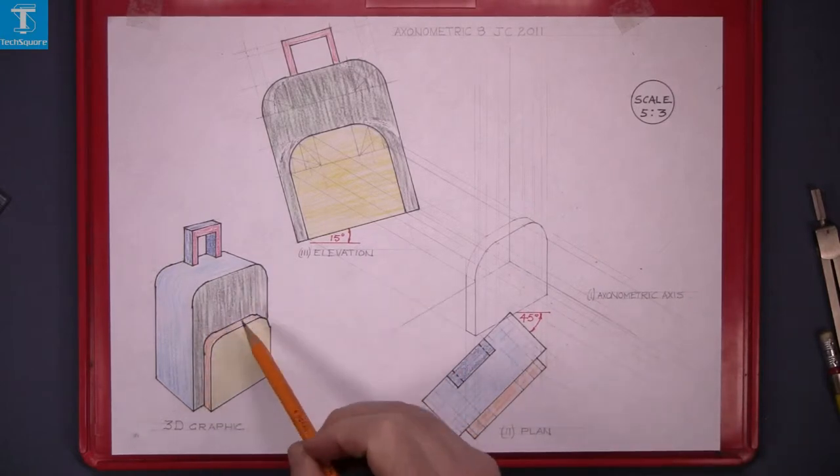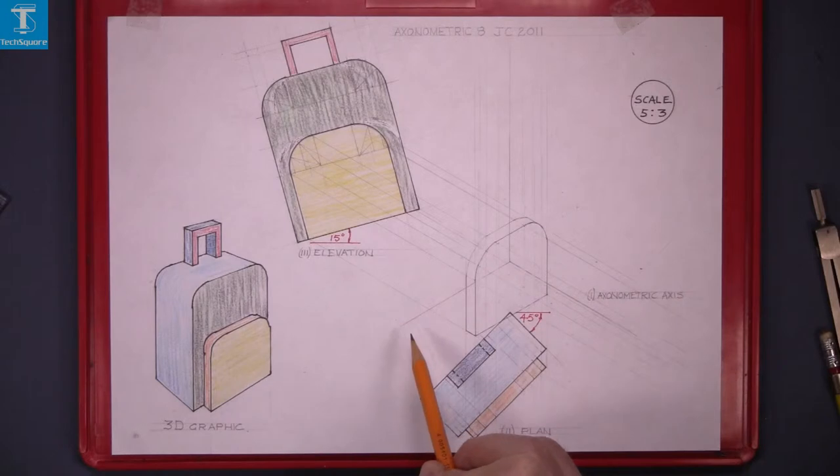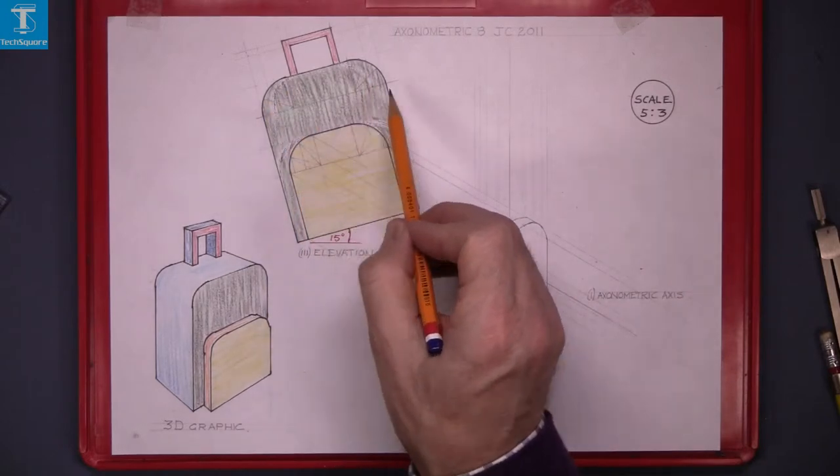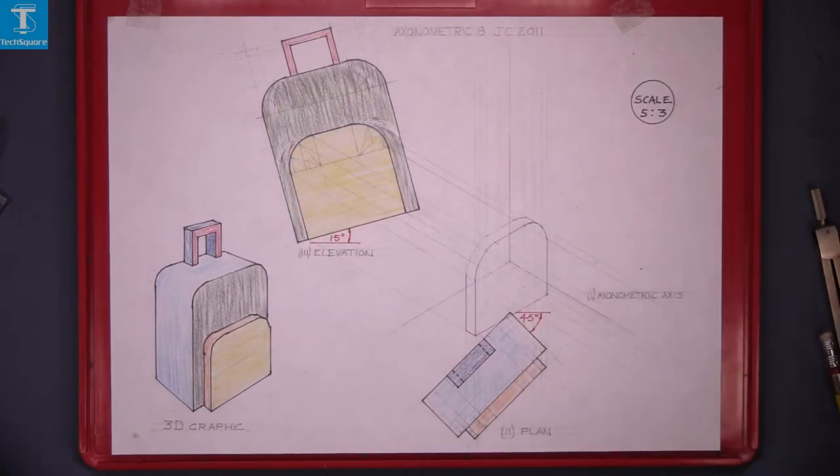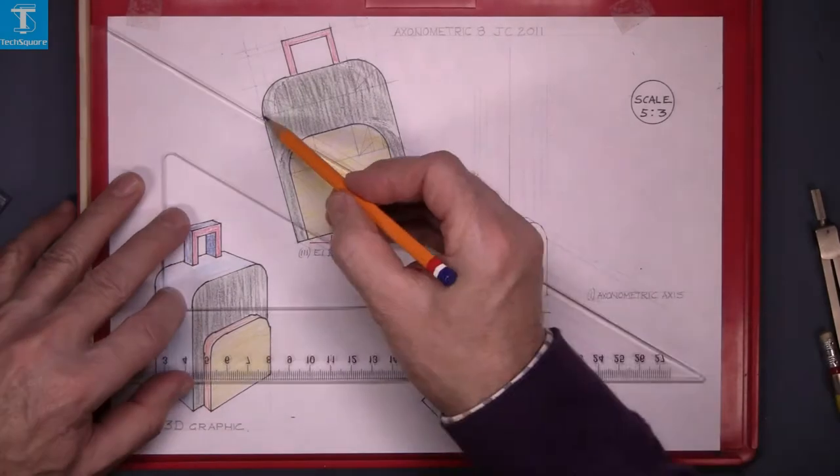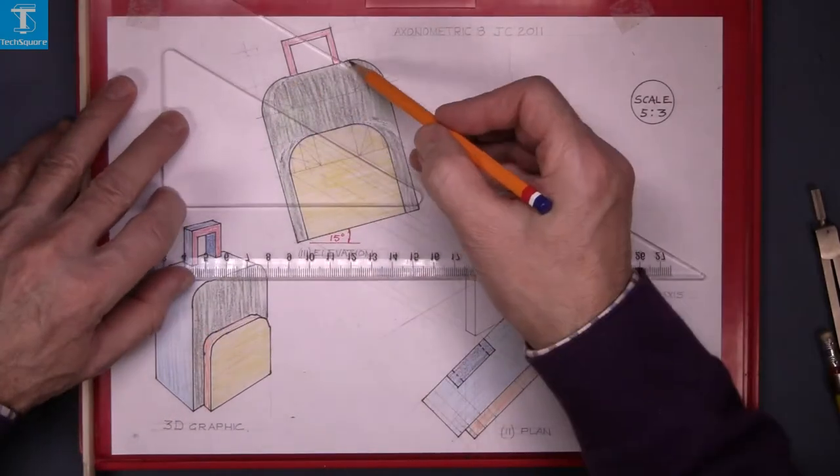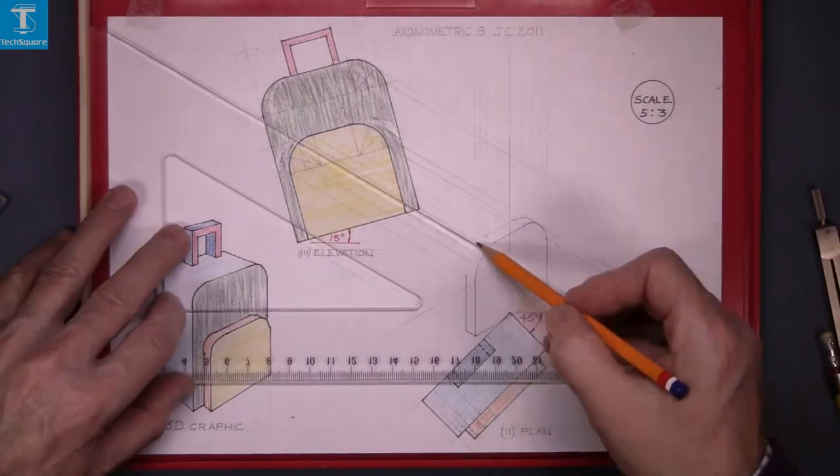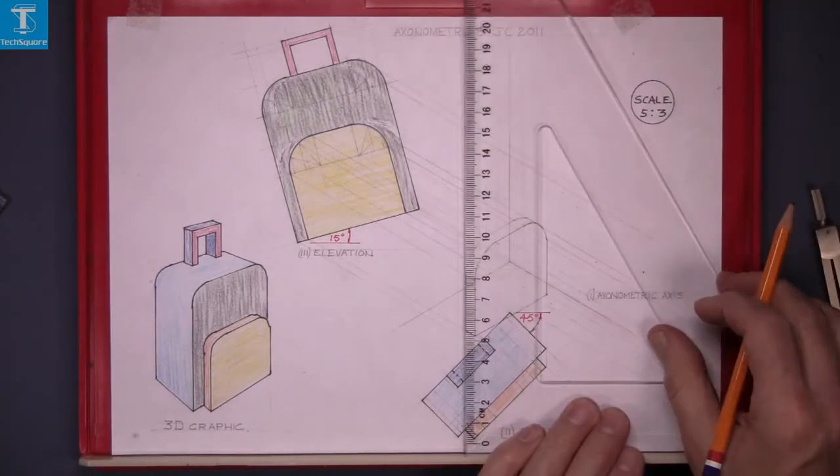Now to get the back part, I'm going to bring down all the points from above here and bring them up from the plan. That's all the points down at 30 degrees. Now vertically up from the plan.